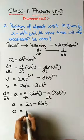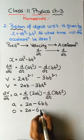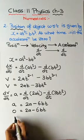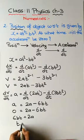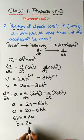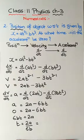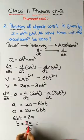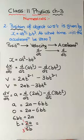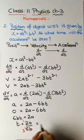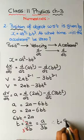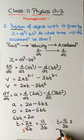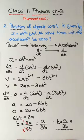Setting acceleration equal to zero: 0 = 2a - 6bt. Rearranging, 6bt = 2a, so t = 2a/6b. Cancelling 2 and 6 gives t = a/3b. Therefore, at t = a/3b seconds, the acceleration of the object will become zero.